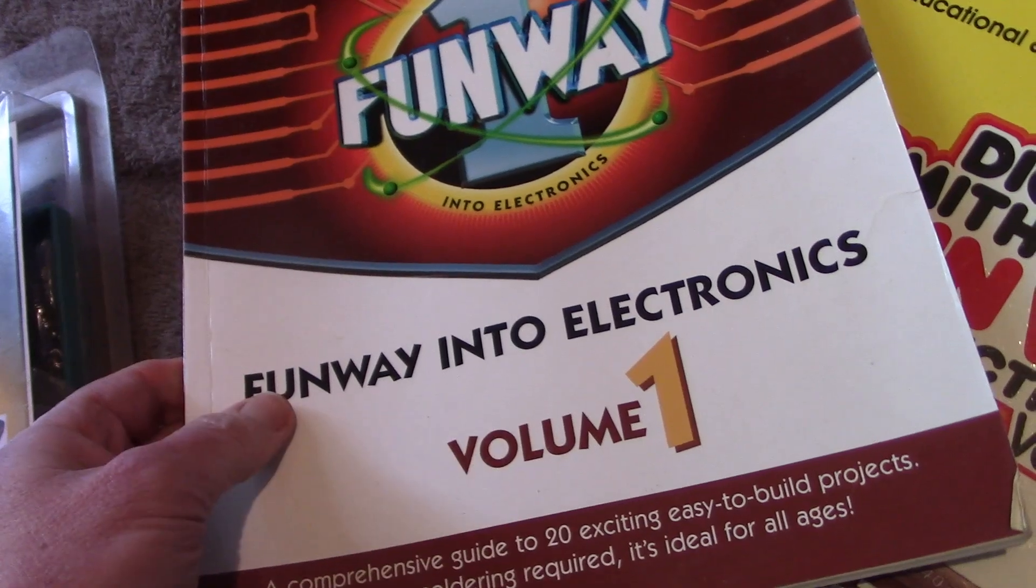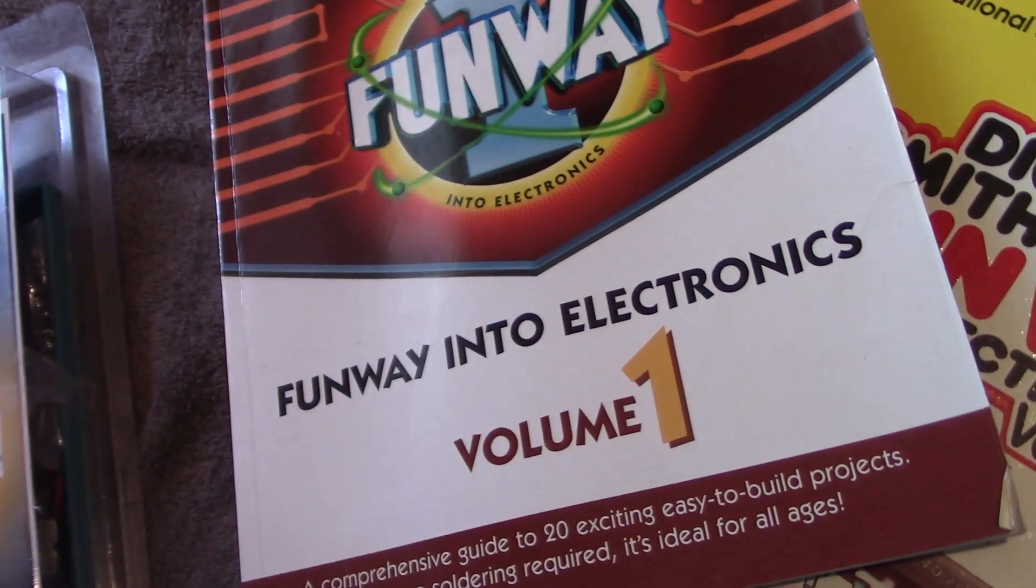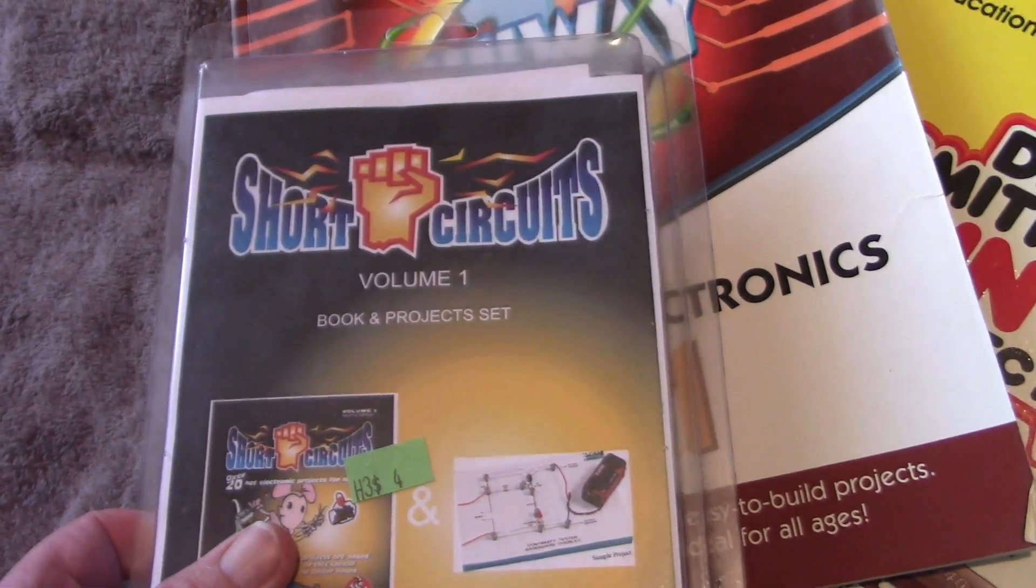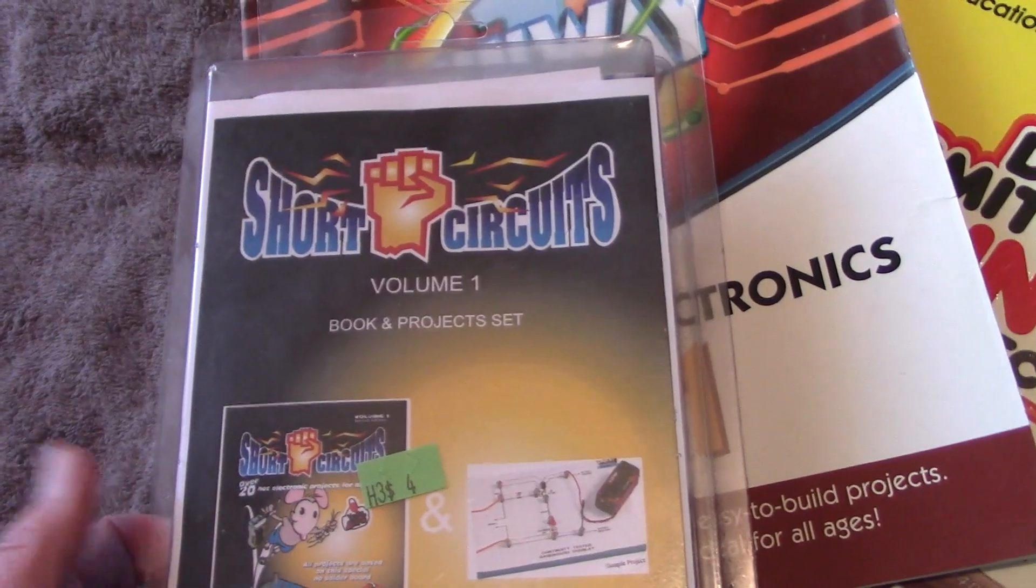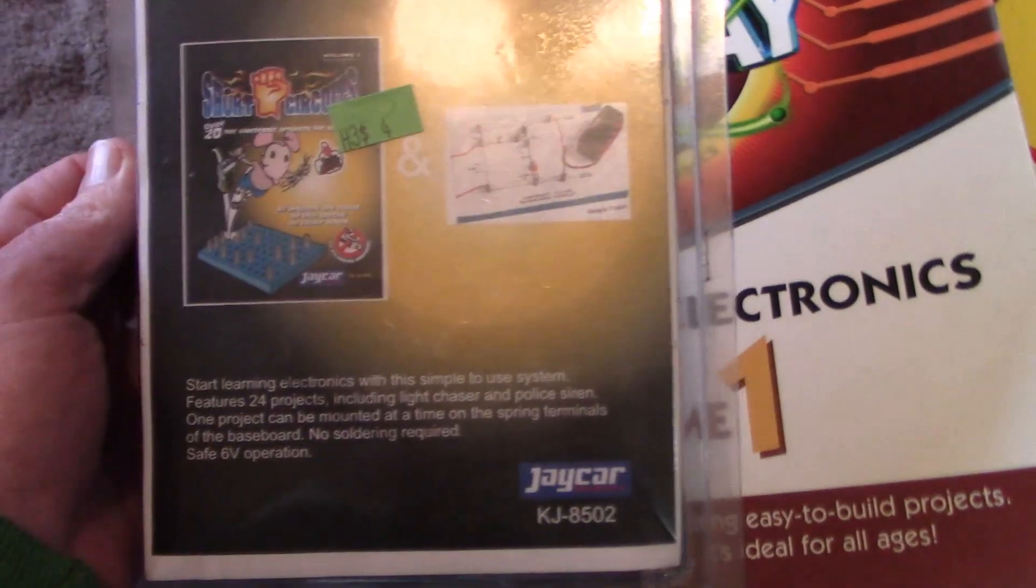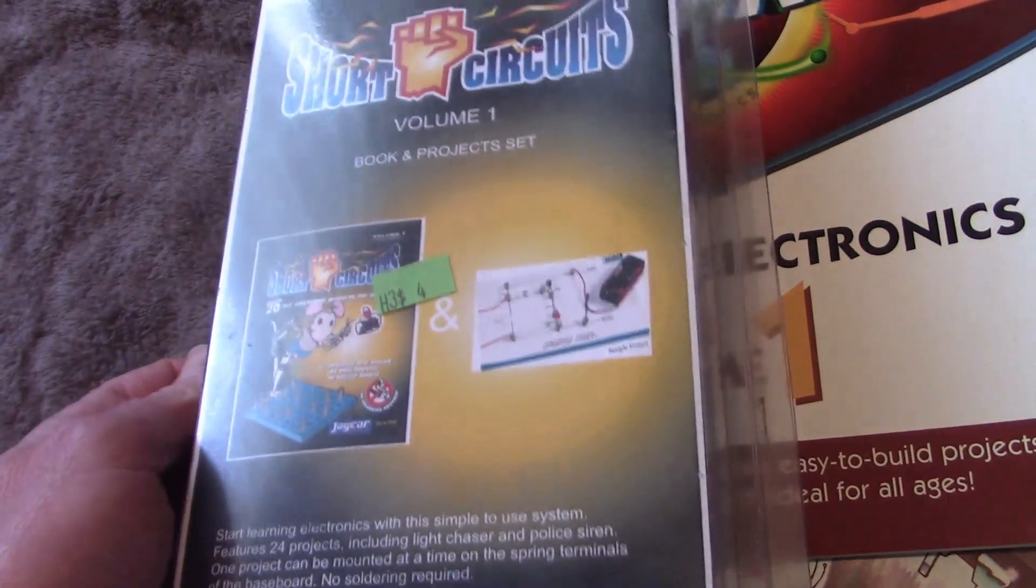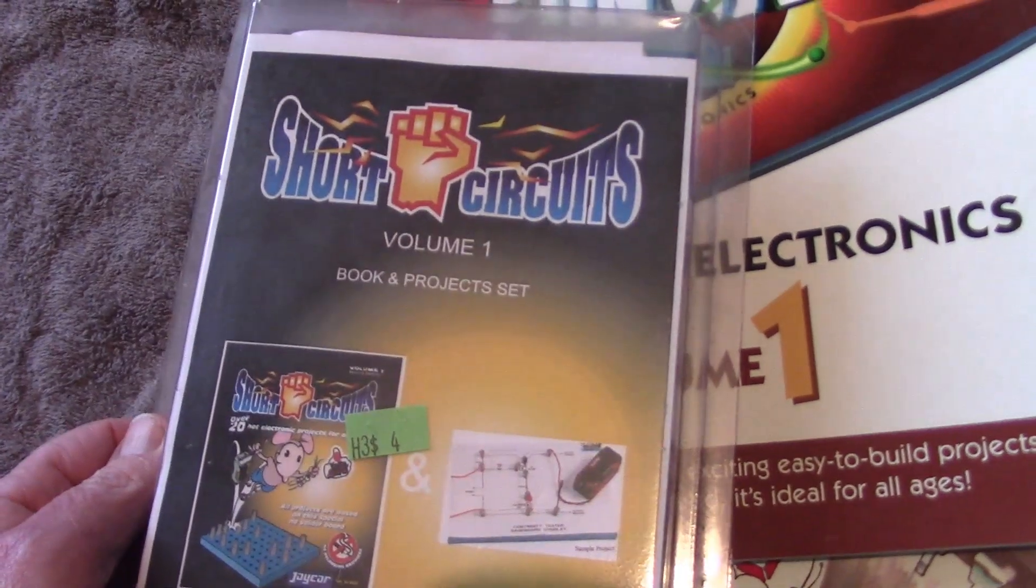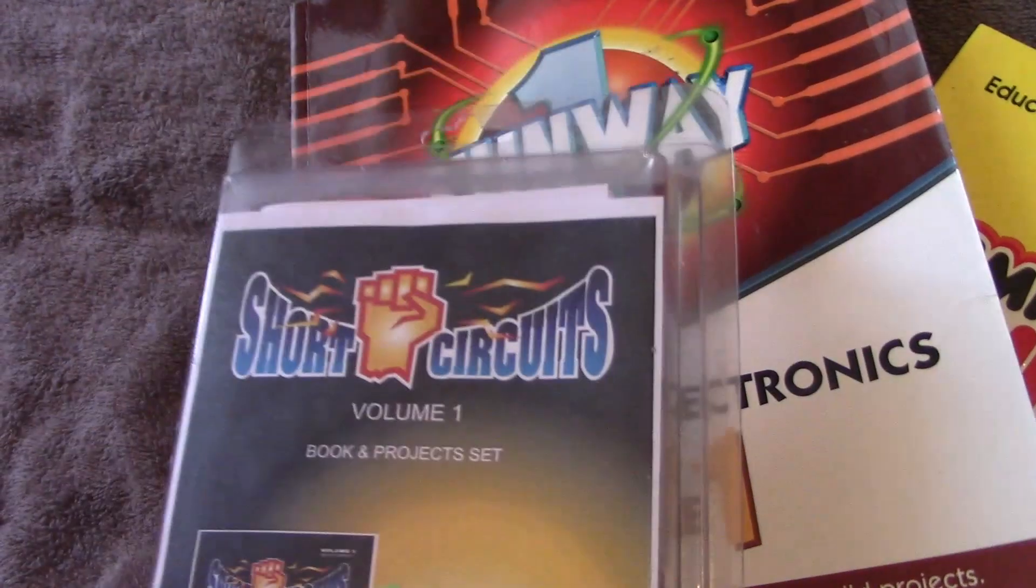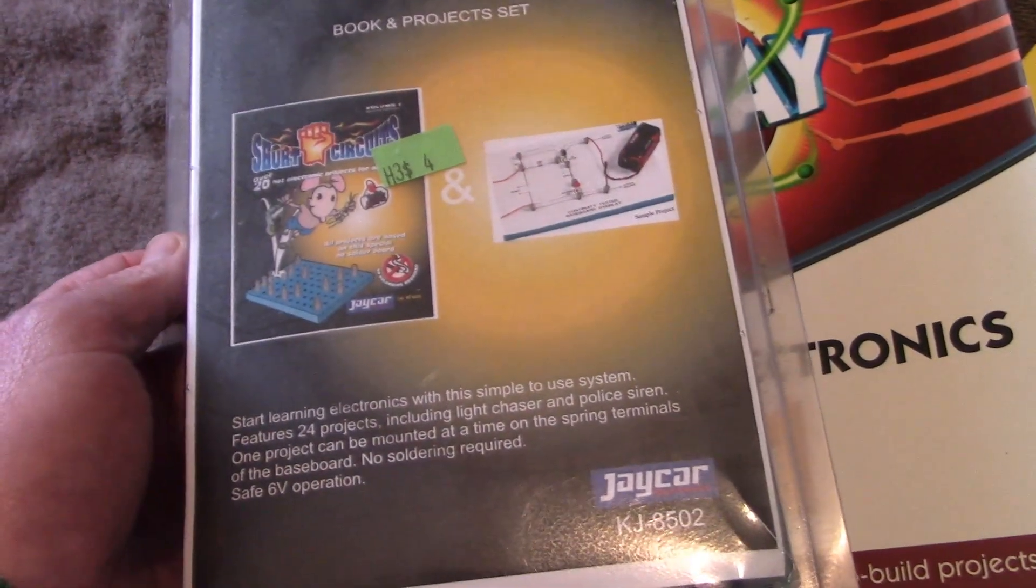Dick Smith got out of electronics and ended up shutting up shop, and that left J-Car as the main retail electronics bits and pieces survivor along with Altronics based in Perth. J-Car have this Short Circuits which is a bit of an updated version to the Funway series but very similar, so we'll take a look and see what sort of things we can make from it.